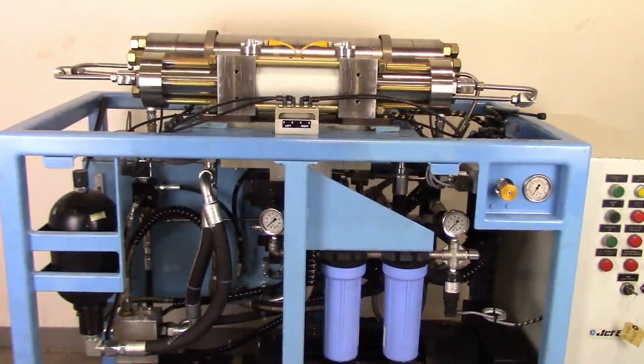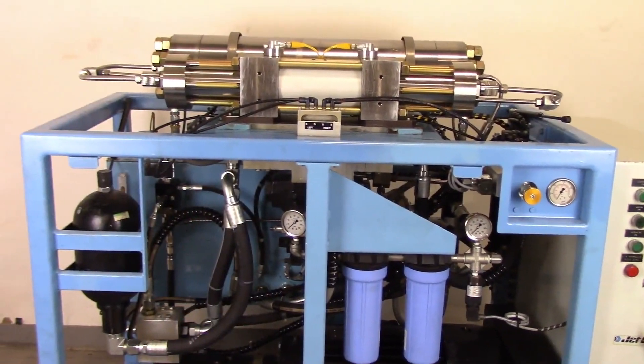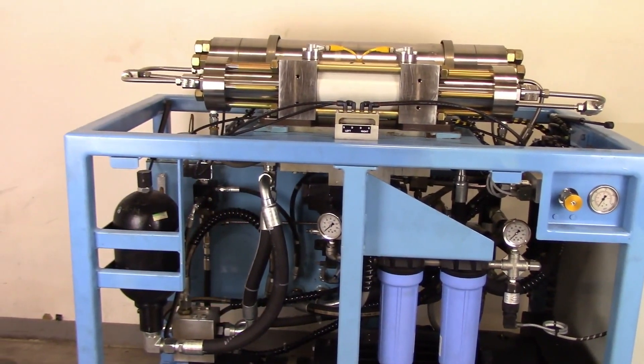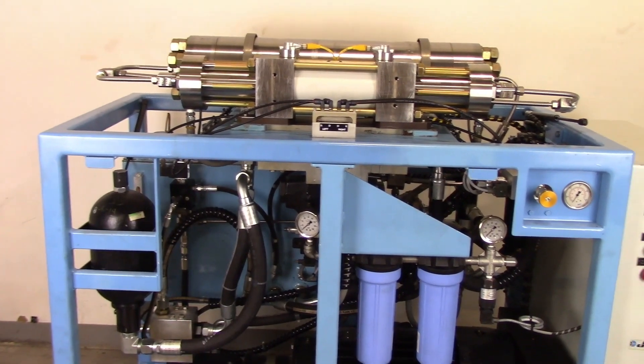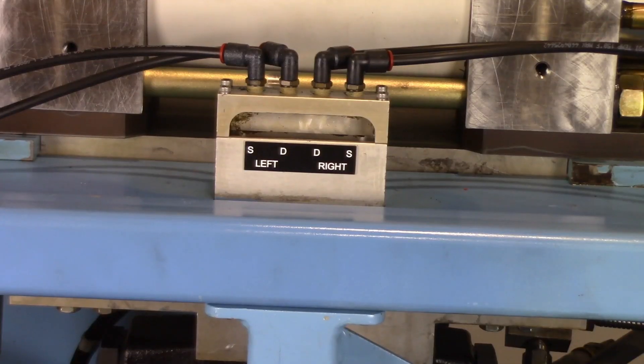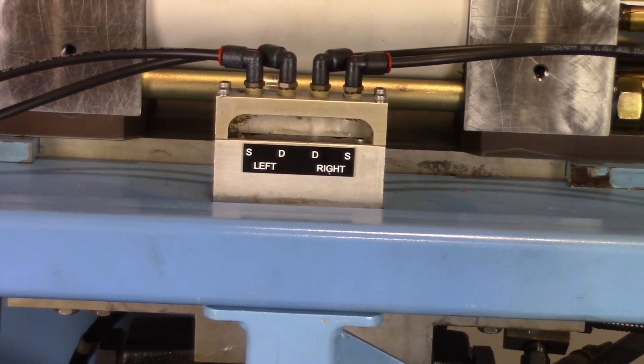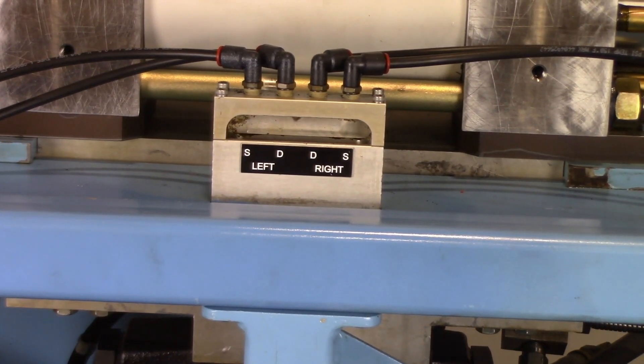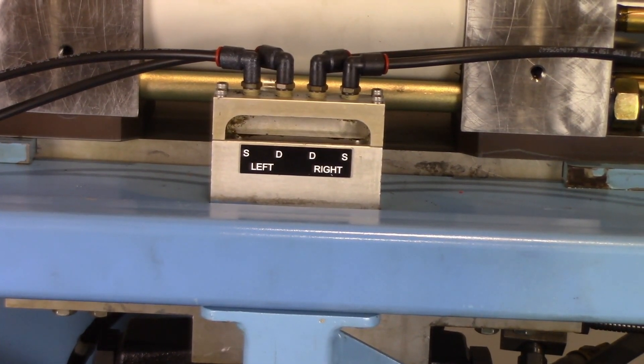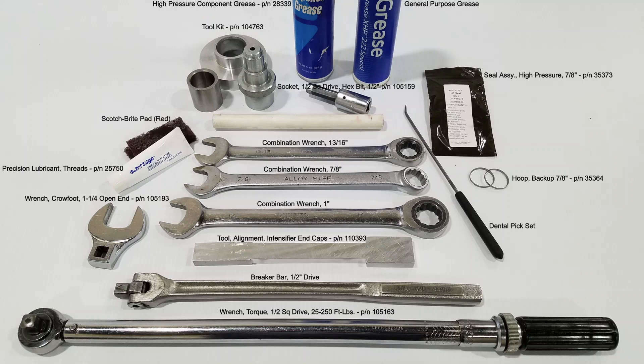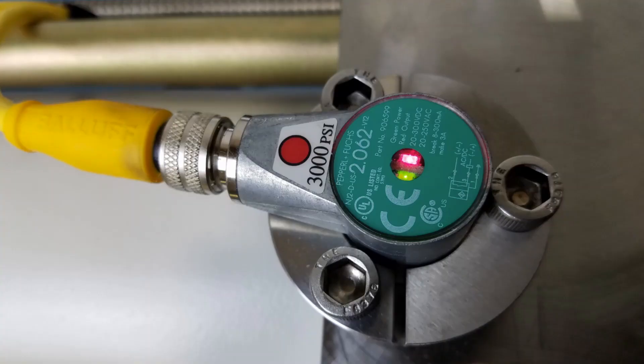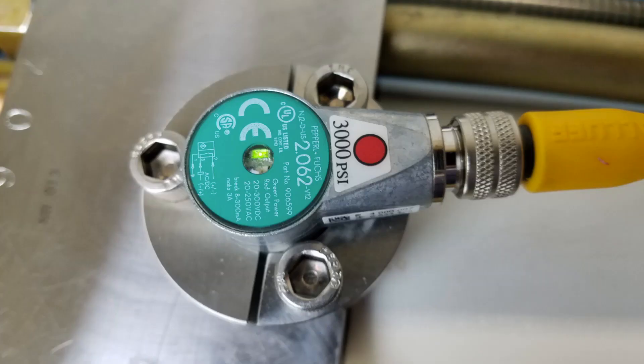We will be performing a high-pressure seal change on a generation 3 intensifier. The high-pressure seals need to be serviced when there is water flowing into the drain container or through the leak detection block. Listed on the screen are the tools and components required to perform this service. Note the lights on the proximity switch on top of the intensifiers.